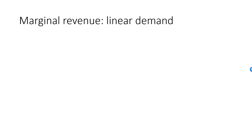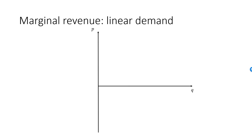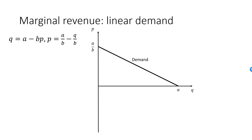Let's have a look at the marginal revenue for a general linear demand function. The demand function is given by Q equal to A minus B times P, and the inverse demand function by P equal to A over B minus Q over B. The demand curve has intercept A over B and intersects the Q axis at Q equal to A.